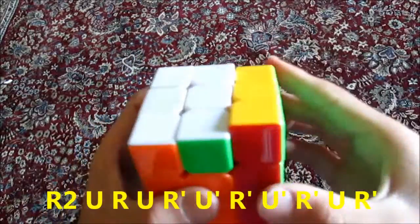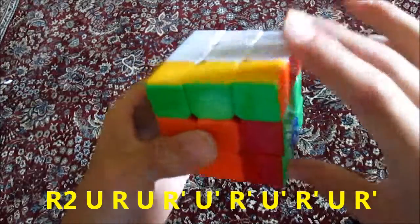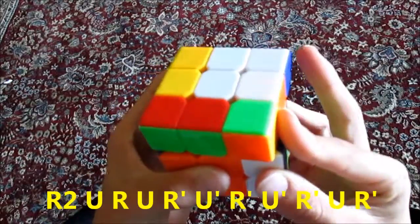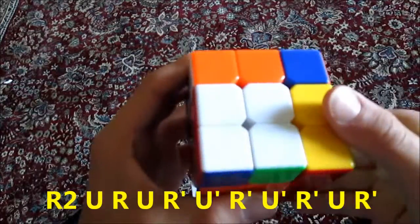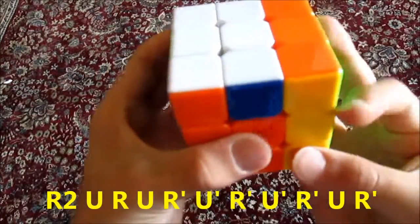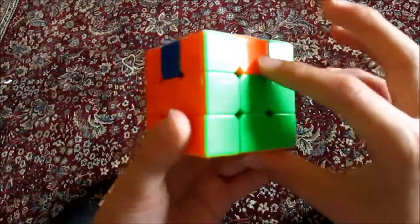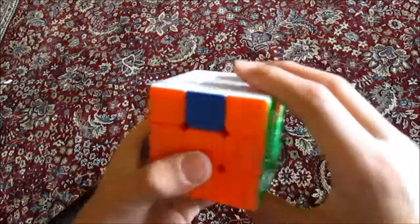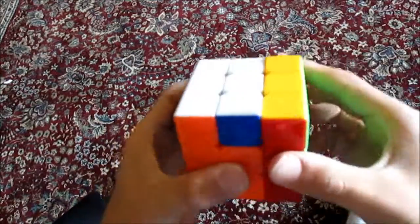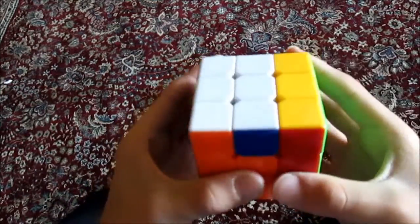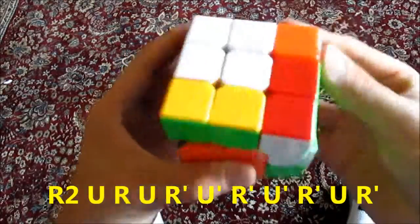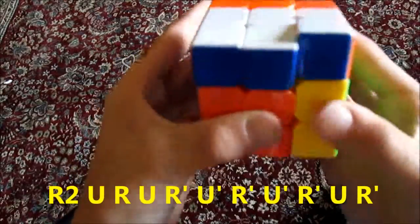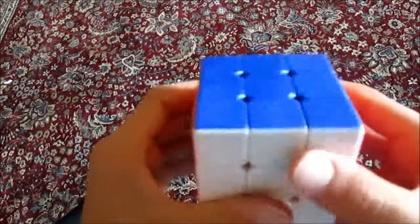And this algorithm is Right 2, Up, Right Up, Right prime, Up prime, Right prime, Up prime, Right 2. And then right prime. So then that won't really do anything, it will just put the orange piece there, which is what we want. And so we can do it again: Right 2, Up, Right Up, Right prime, Up prime, Right prime, Up prime, Right Up. And then right prime. And that finishes it off.